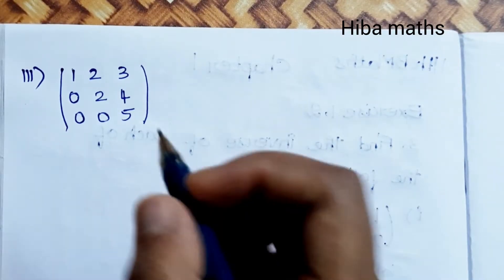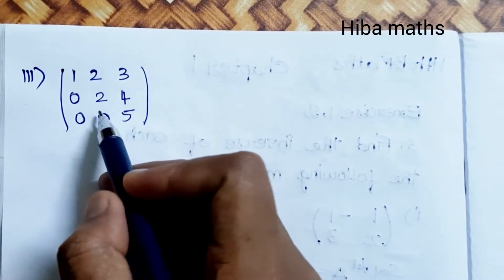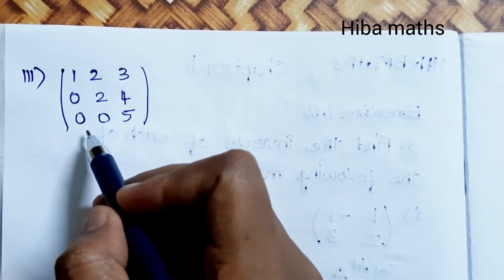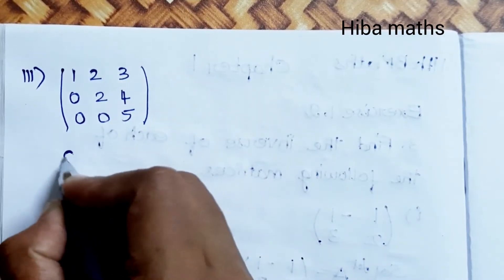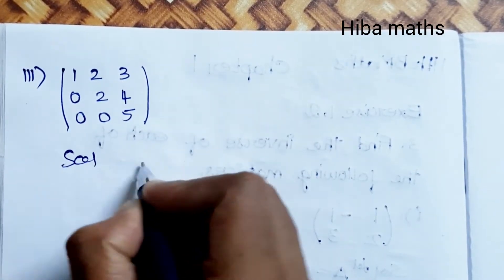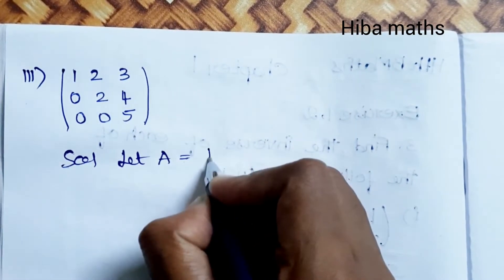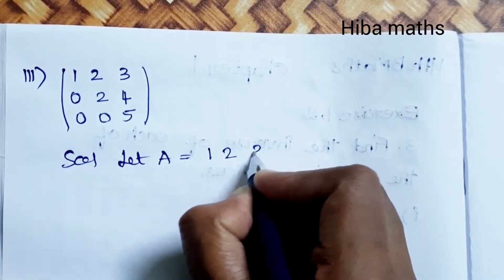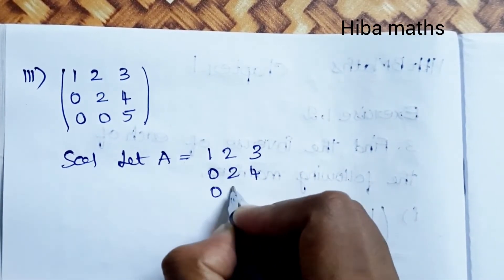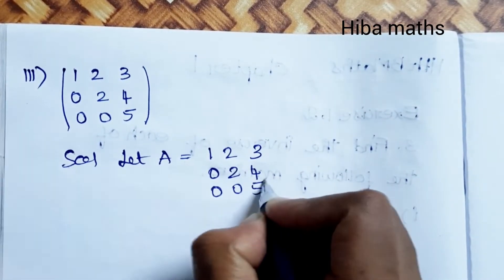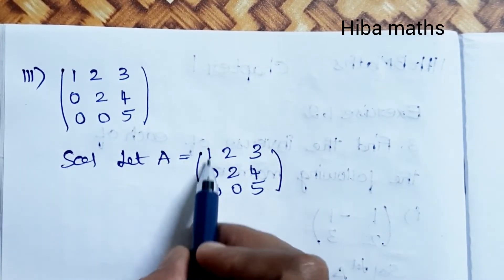Third subdivision: Let A = [1, 2, 3; 0, 2, 4; 0, 0, 5]. This is a 3×3 upper triangular matrix. We apply the same inverse formula.